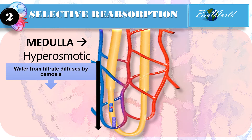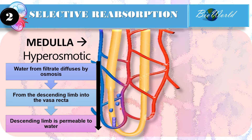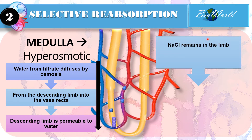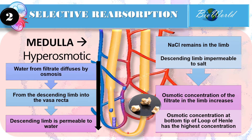So the water molecules in the filtrate will diffuse by osmosis to the vasa recta. This is possible because the descending limb is permeable to water. However, the descending limb is impermeable to sodium chloride, so the sodium ions will remain in the descending limb of the loop of Henle. The osmotic concentration of the filtrate will be highest at the bottom tip of the loop of Henle. Now if we do not consume enough water, these sodium ions will not dissolve — instead they will solidify to form kidney stones. So it is always necessary to remain hydrated to prevent formation of kidney stones, which can lead to kidney damage.